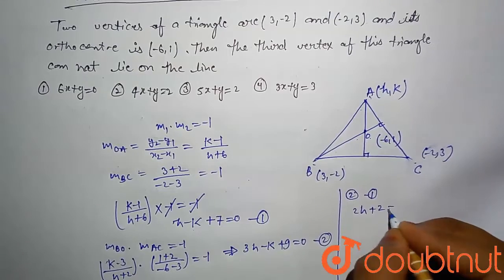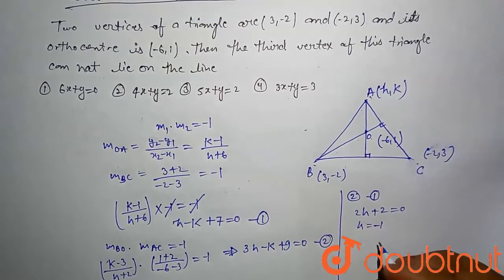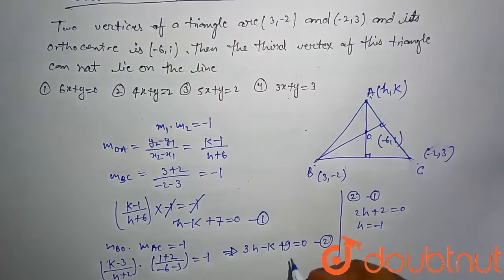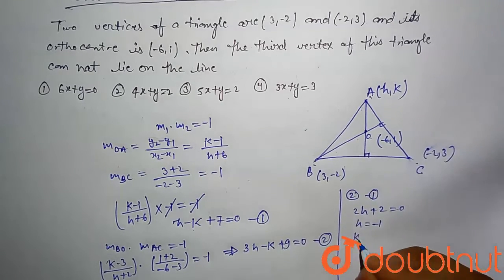Then h comes out -1. If you put this value in this equation, then our k comes out 6.